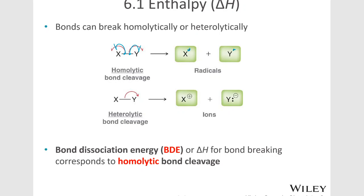Or we can have heterolytic bond cleavage, which is the most common form of bond cleavage we're going to see in this book. We only have one chapter that deals with radicals. Almost all the rest of the reactions we see are ionic reactions involving heterolytic bond cleavage. There, one of the atoms takes the two electrons from that bond, and the other atom loses that bond to form an ionic species — one gets a lone pair and the other becomes positively charged.